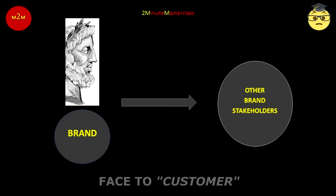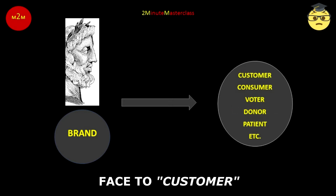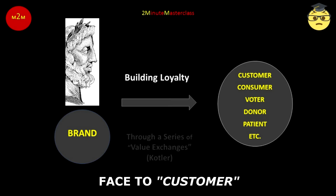But the owner will derive no benefit from the brand if the face towards other stakeholders does not smile, offering to them value as they choose the brand over others. This Janus face of the brand must persuade them to purchase, vote, donate, or give their goodwill — an accountant's term — building loyalty in a series of value exchanges which Phil Kotler identified as being at the heart of marketing.